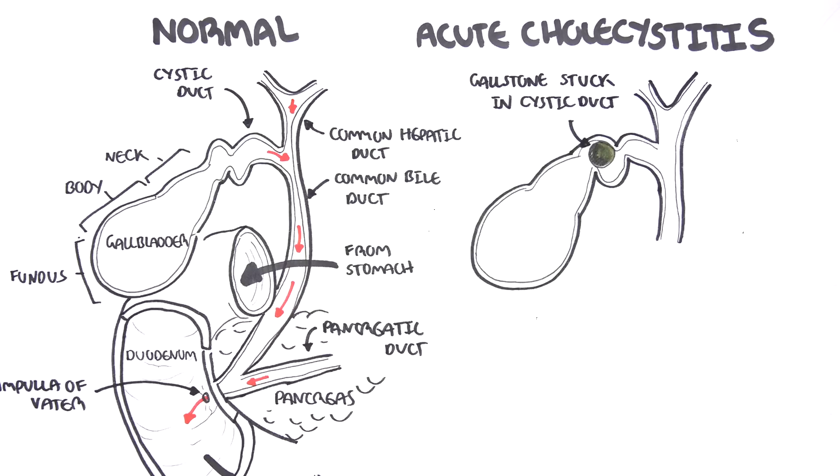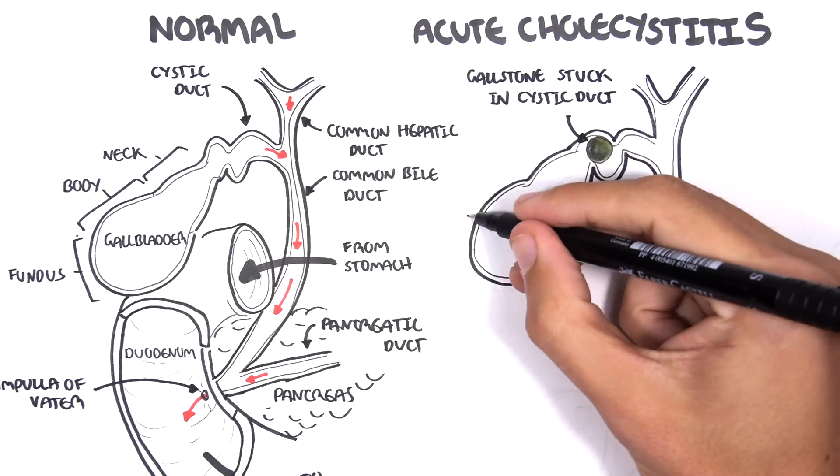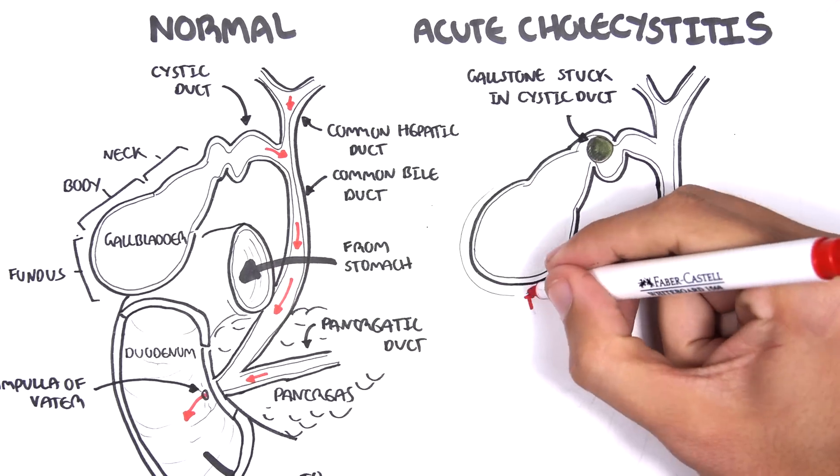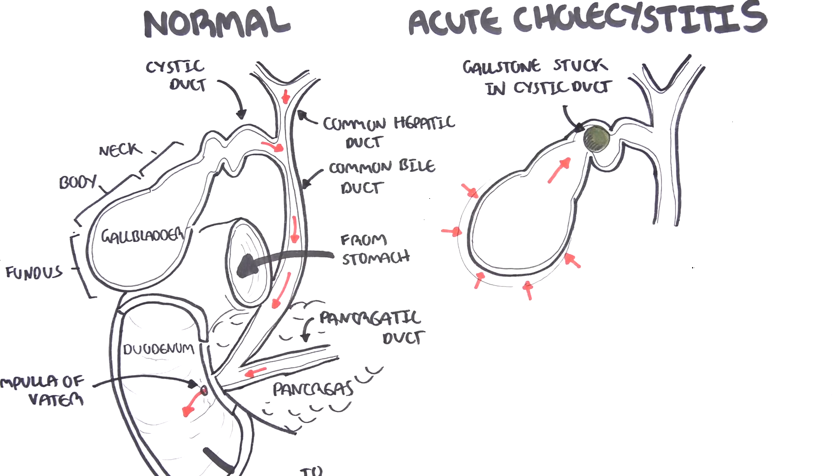When the gallstones get stuck in the cystic duct, the gallbladder will try to contract and push it out without any success. And this obstruction results in inflammation to the gallbladder, and this is acute cholecystitis.